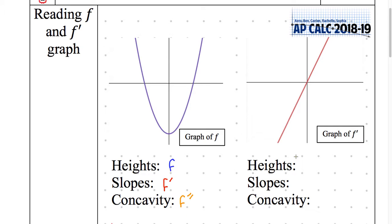Heights. When I'm on a graph of F prime, what are the heights going to be? It's going to be F prime. And slopes are going to be F double prime. I need to go to orange for my F double prime. And concavity. F triple prime. And what is the name of F triple prime? Jerk.